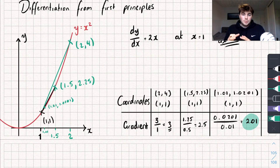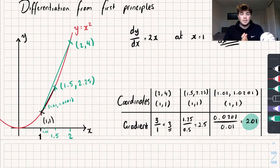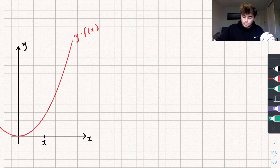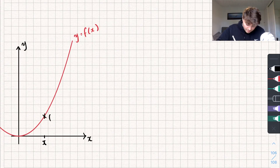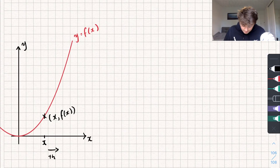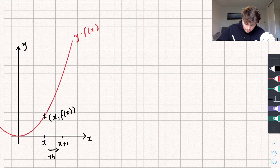So differentiation from first principles works on the idea that we're drawing a chord that is infinitely close to where we're interested in. Say we had a generic curve y equals f of x, and let's plot the point x on the curve — it's going to have coordinates x and f of x. Now let's go a very short distance away from that point x. Let's go a distance h away, where h can be a very, very small number. So this takes me to the point x plus h.